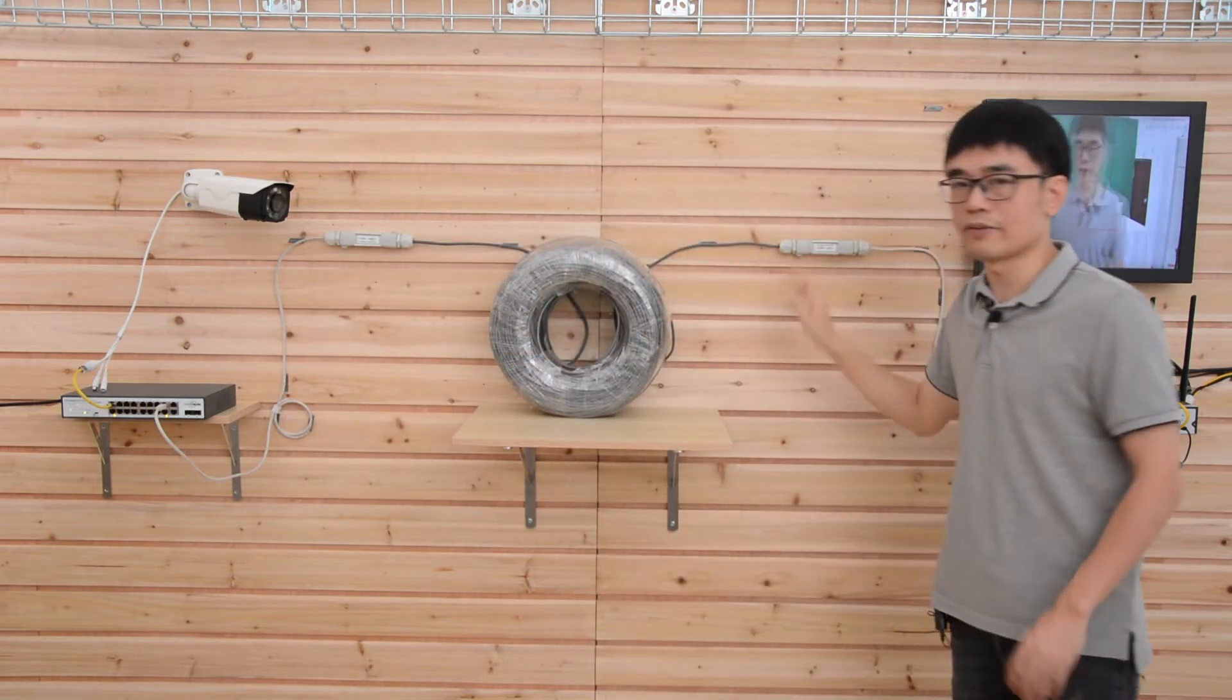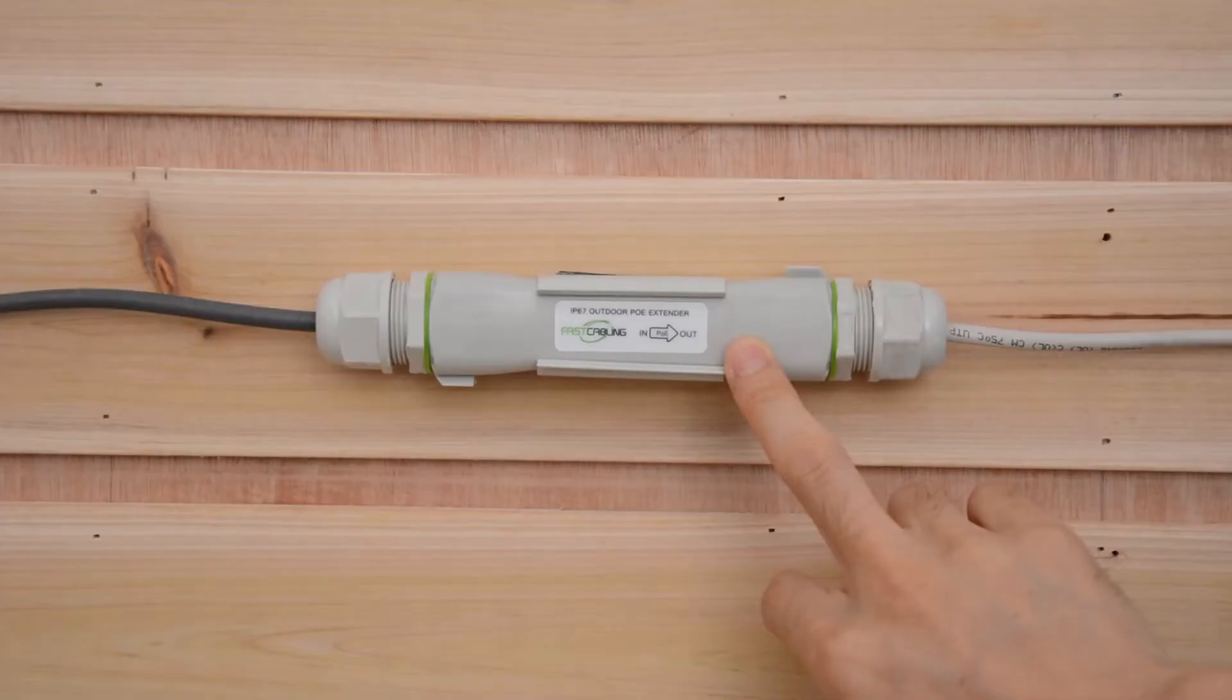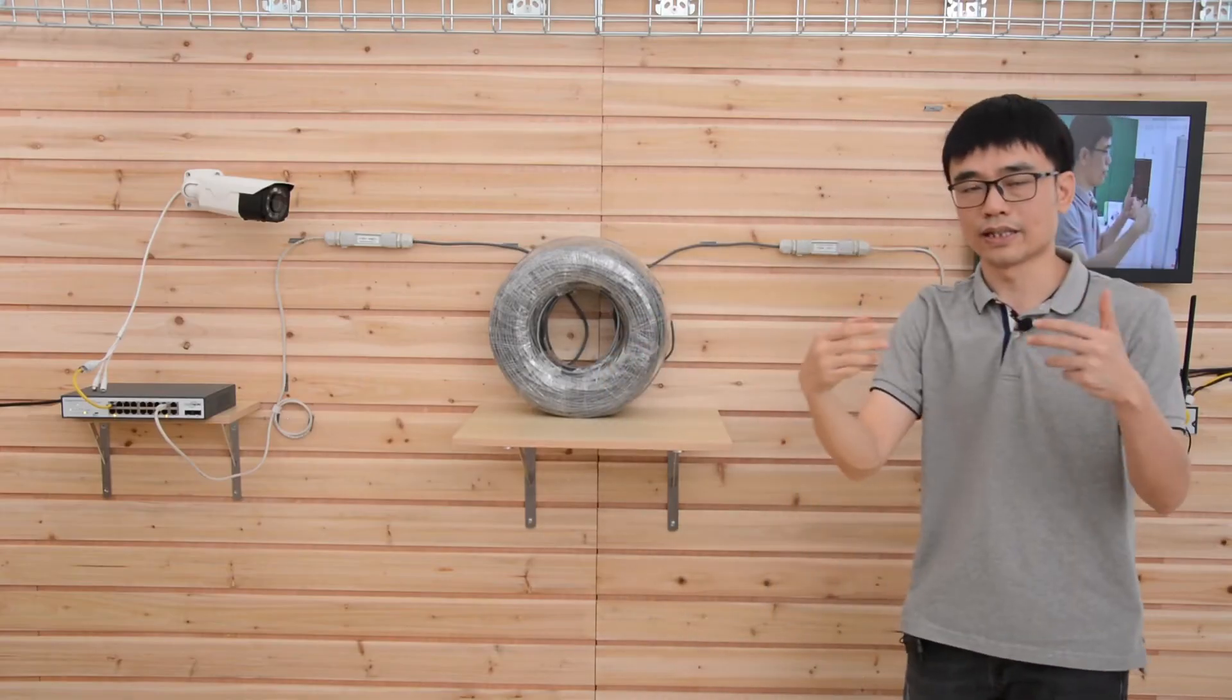And for the second PoE extender, we don't need to flip anything. So eventually we got input and input. The two inputs are facing each other.